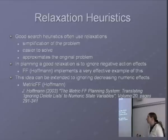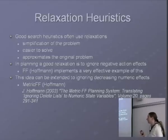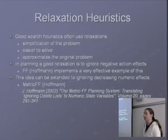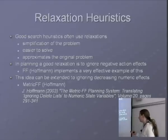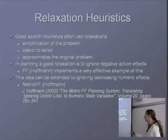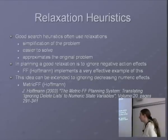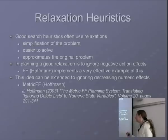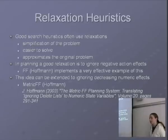What we conventionally do in planning is we ignore negative action effects — the delete effects of actions — and that is the FF heuristic. It's a very good example of this and is very widely used. And also this idea can be extended to numeric effects.